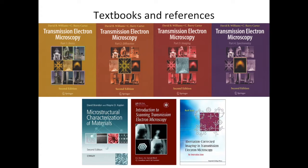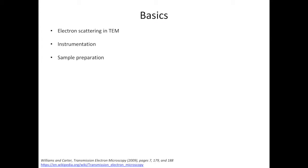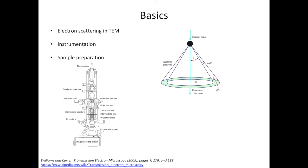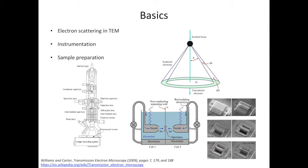There will be five sections of this TEM course, or five playlists on YouTube: basics, diffraction, imaging, spectroscopy, and other TEM-related techniques. In the basics section, we'll start by talking about electron scattering in TEM, then move to instrumentation — electron sources, lenses, etc. We will also talk about sample preparation. The example on the left shows electropolishing to prepare metal samples, and the one on the right is FIB liftout for site-specific samples.